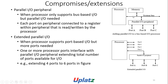Here is a system bus to which a parallel IO peripheral is connected. Extended parallel IO: when the processor supports port-based IO but more ports are needed, one or more processor ports interface with the parallel IO peripheral, extending the total number of ports available. Example: extending four ports to six ports — three processor ports exist, one is connected to the parallel IO peripheral, and three additional ports are added.